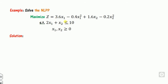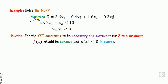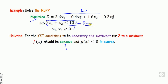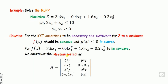Let's discuss the first example. The constraints are of less-than sign, so this nonlinear programming problem is solved using the KKT condition — not the Lagrangian multiplier, which is only applicable when constraints are equalities. Since the problem is maximization, we must prove that f(x) is concave and the constraints are convex. The constraint is a linear function, and every linear function is always convex. To prove f(x) is concave, we derive the Hessian matrix. With variables x1 and x2, it is a 2×2 matrix.